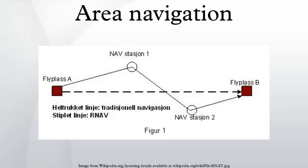Longitudinal performance implies navigation against a position along a track. However, at the present time, there are no navigation specifications requiring 4D control, and there is no FTE in the longitudinal dimension. The current navigation specifications define requirements for along-track accuracy, which includes NSE and PDE. PDE is considered negligible. The along-track accuracy affects position reporting and procedure design.